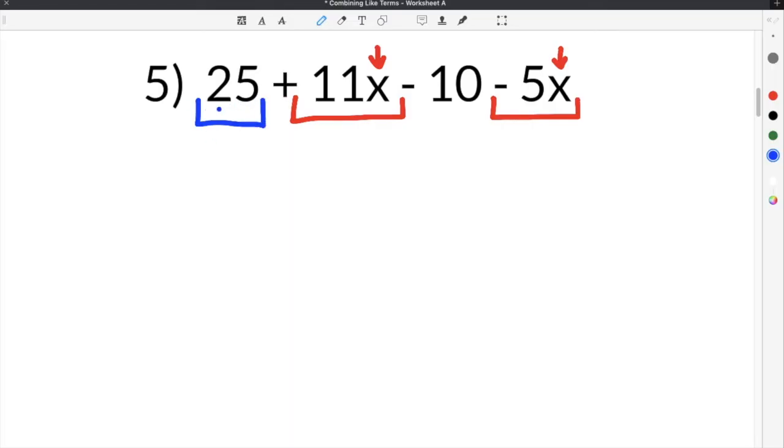The second thing I notice is that we have constants. In this case, we have 25 and we have negative 10. They are both numbers, which means that they are automatically like terms. Now we are going to combine them. So I know that 11x minus 5x get combined, so 11x minus 5x will give us 6x. And then we combine 25 and negative 10 and then we do 25 minus 10 and 25 minus 10 is 15. So our answer is 6x plus 15.